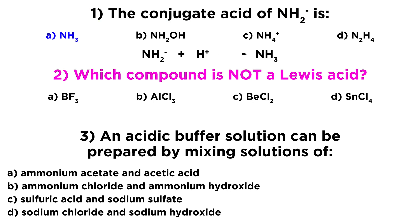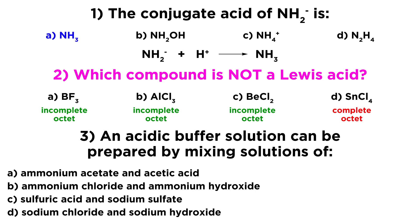Now looking at number two, which one is not a Lewis acid? In order for something to act as a Lewis acid, it must be an electron pair acceptor. The central atom must be able to accommodate another pair of electrons — something is going to attack it. What we notice is that the first three — BF3, AlCl3, and BeCl2 — all have incomplete octets, meaning they can accommodate more electron density. We've seen AlCl3 act as a Lewis acid catalyst in reactions in organic chemistry. However, SnCl4 — that tin atom — has a complete octet with four bonds to other atoms, so it will have a very hard time accommodating more electron density and is very unlikely to act as a Lewis acid. So option D is our answer.